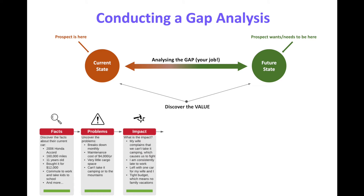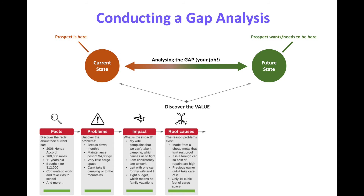The impact includes: the wife complains a lot about the camping, which causes fights; they're consistently late for work; they're left with one car. And salespeople very rarely — only the very best ones — start examining the root cause. What's causing these problems? The car is made from cheap metal, it isn't rust-proof, it's a foreign car so parts are very expensive, and the previous owner didn't take care of it. These are the root causes to the problems.